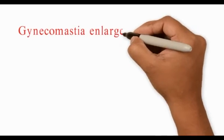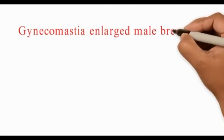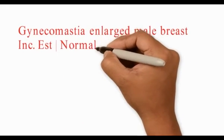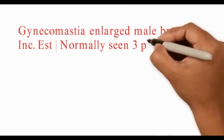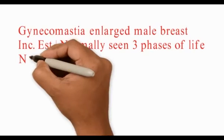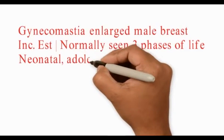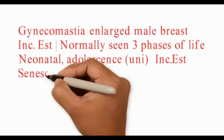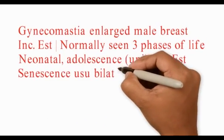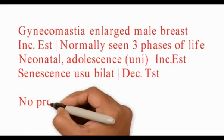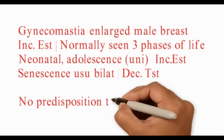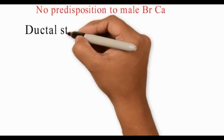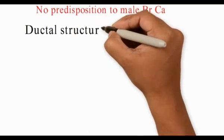Gynecomastia, or enlargement of the male breast, occurs due to increased estrogen levels. It is usually bilateral except in adolescence, where it might be unilateral. In neonates and adolescence there is an increased estrogen level, whereas in senescence there is a reduced testosterone level.